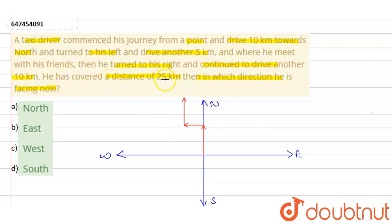He has covered a distance of total 25 km. Then in which direction is he facing now? तो यहां से 10 km चला यहां तक, फिर 5 चला यहां पर, फिर 10 चला.